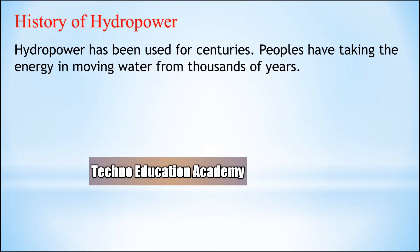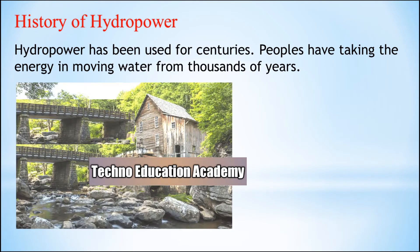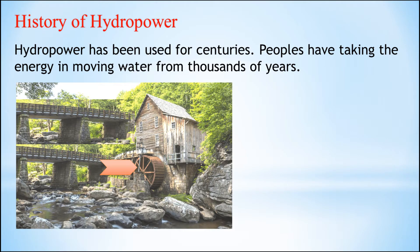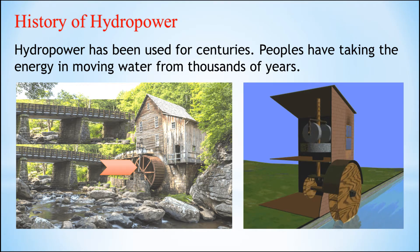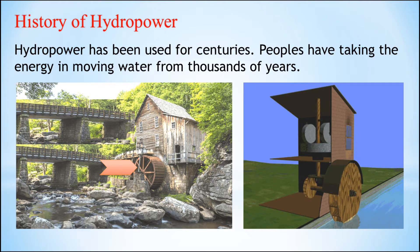Now we will discuss the history of the hydropower plant. Hydropower has been used for centuries. People have been harnessing the energy in moving water for thousands of years, and today it is still a power resource that can generate clean and renewable energy. People used water wheels to grind wheat into flour many years ago.